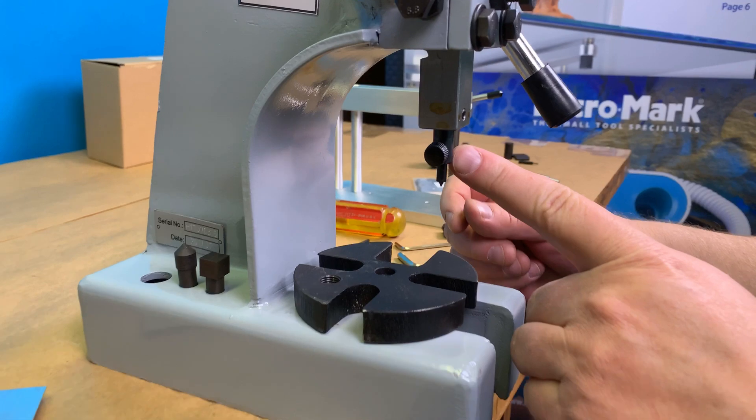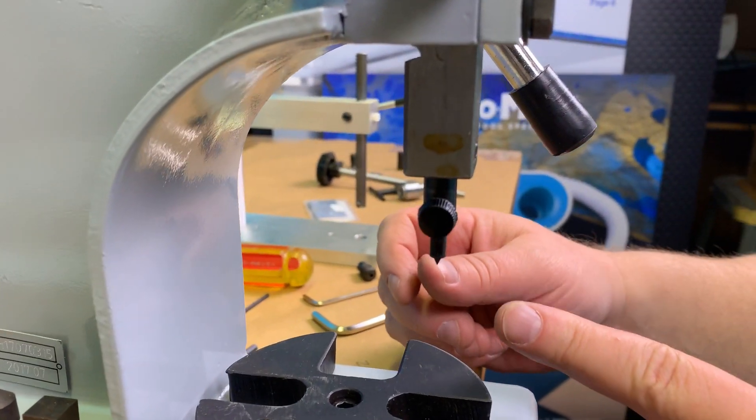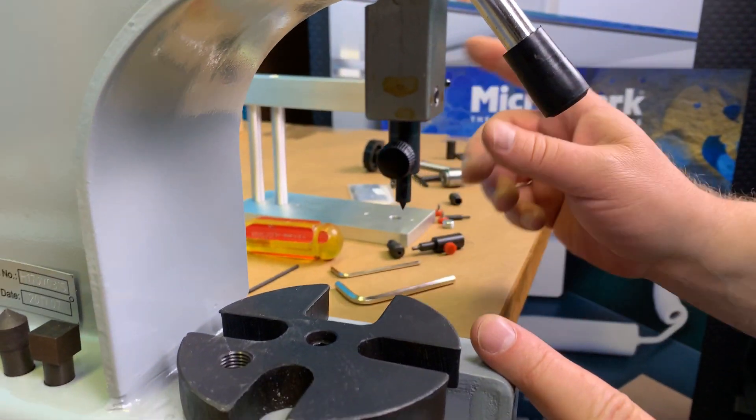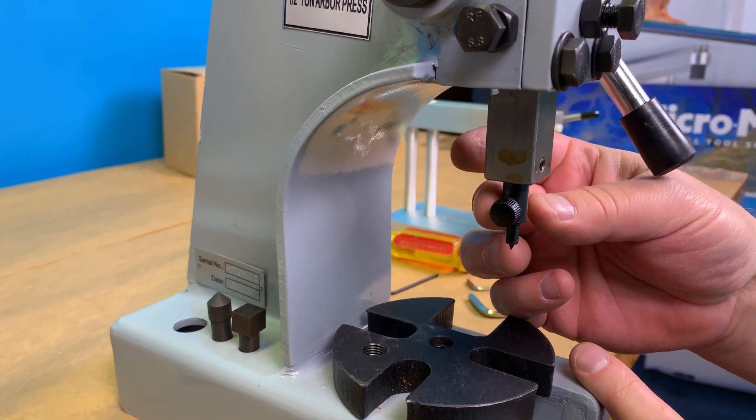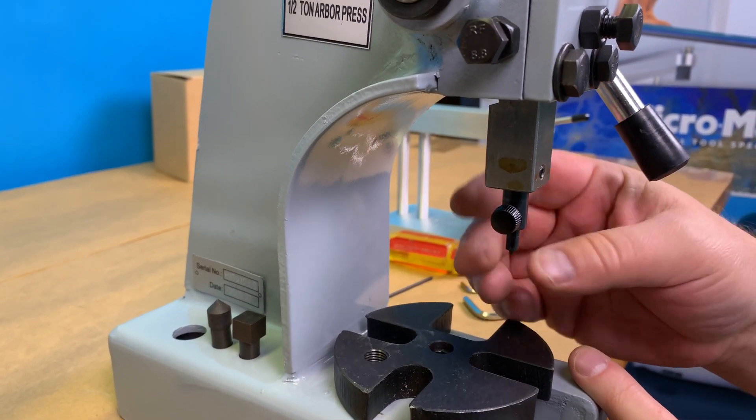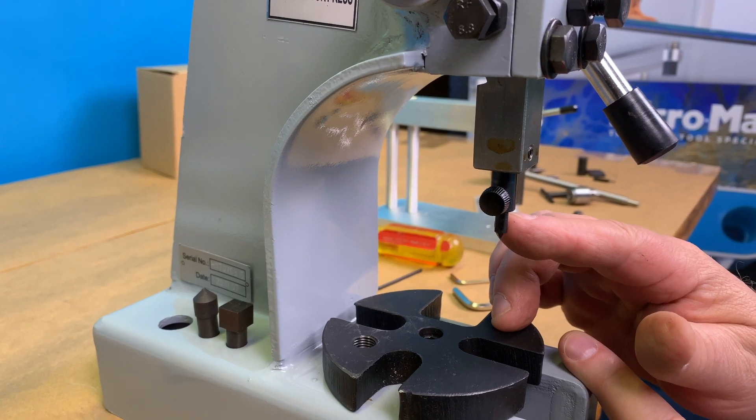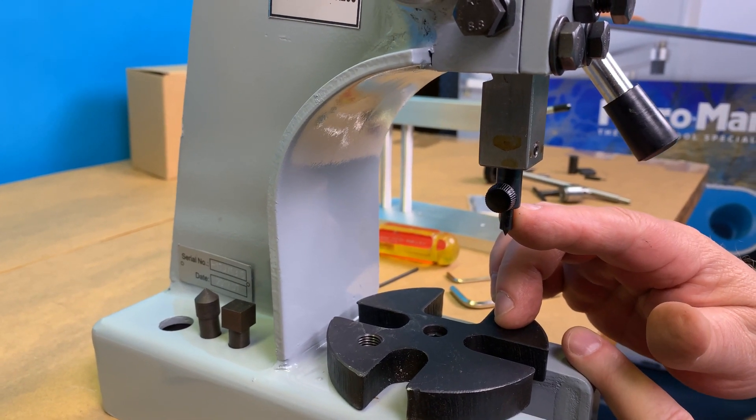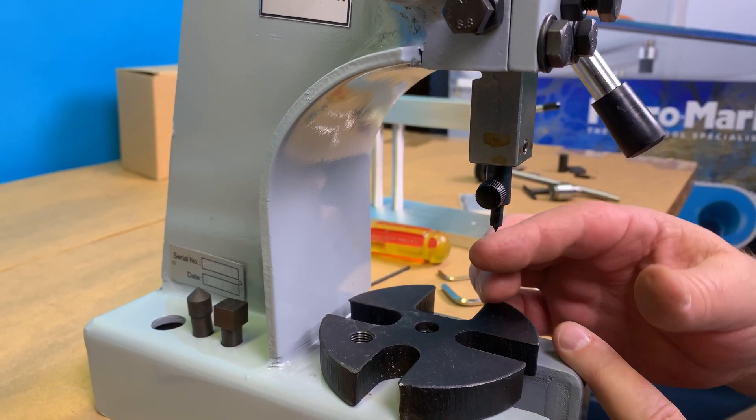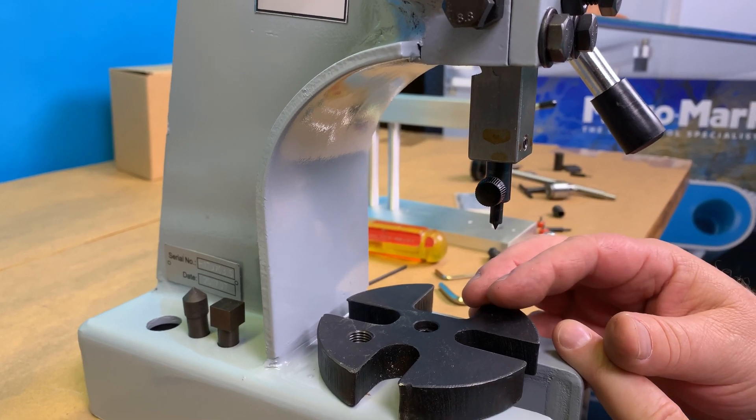I now have removed the punch and the die that was in earlier. I've removed its adapter. I've kept installed the adapter that comes with the arbor press. And now I'm using one of the tooling from the 9-piece tooling set from 83708. This is the pointed punch.